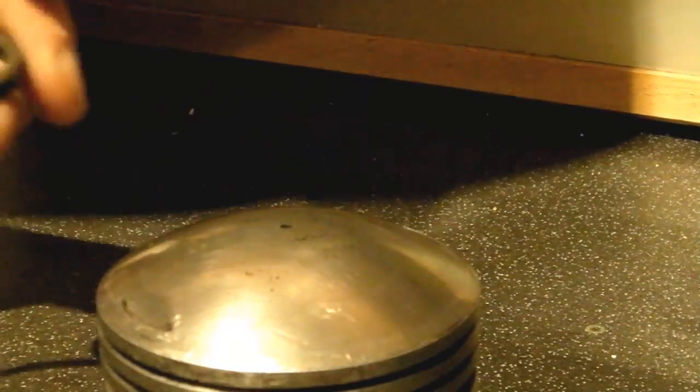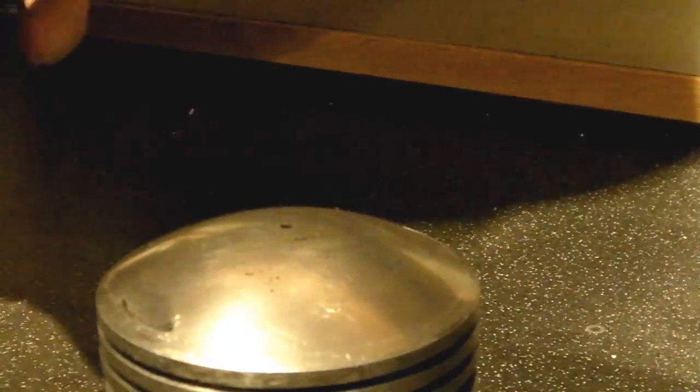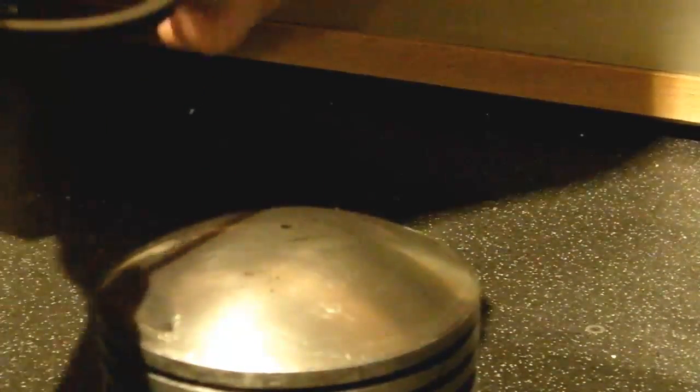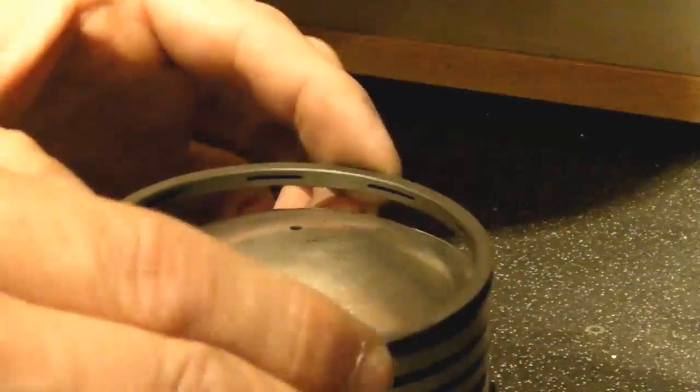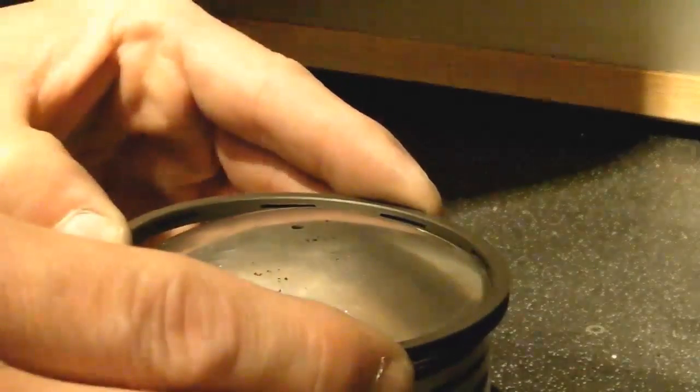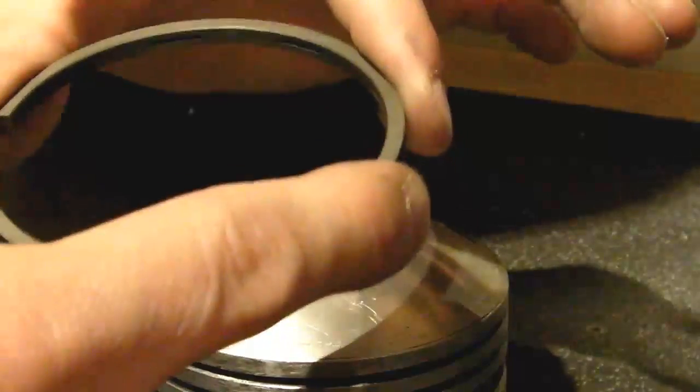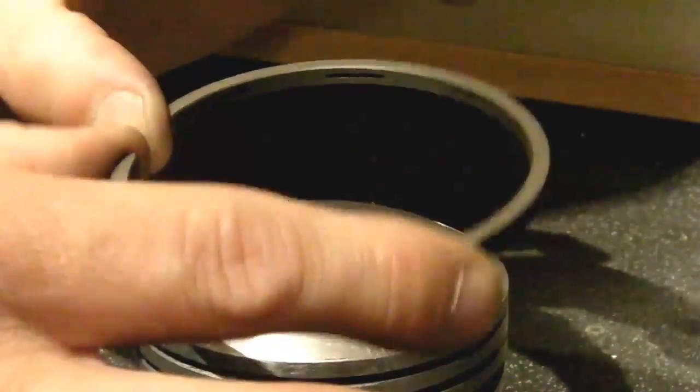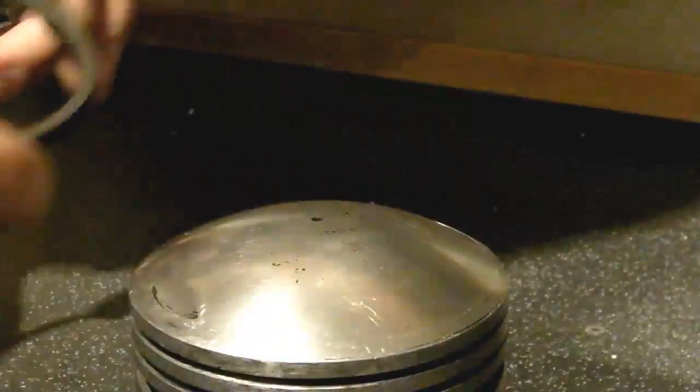Okay, so fitting the piston rings to the piston. Now you can buy special pliers that will spread the piston ring for you in a safe manner and allow you to insert it. However, you can do it by hand if you're very careful. They are quite brittle, and if you get too forceful they will snap and then you'll just have to start all over again with new piston rings. So do be careful when you're doing this.